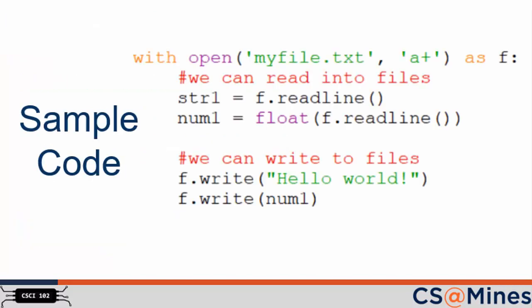Let's put what we've learned so far into an example. This example code opens a file, myfile.txt, for reading and appending. We use the as f to tell Python that we will use f as an alias for our file object. Then we can do anything we need to with the file, like reading and writing, inside the code block. When the code block is done reading and writing, the with statement will automatically close the file for us.